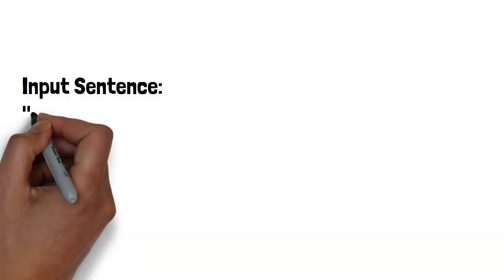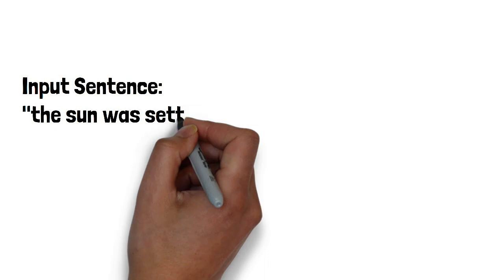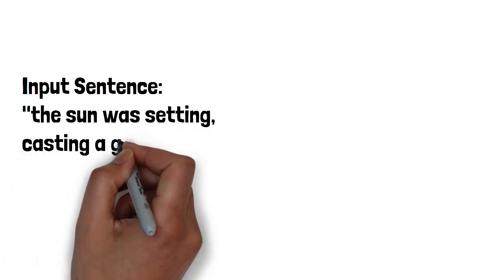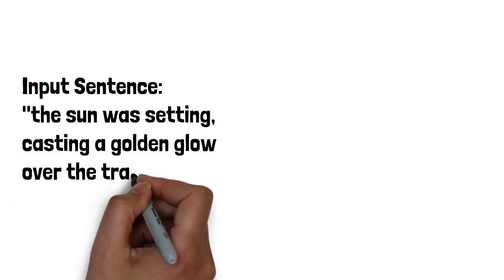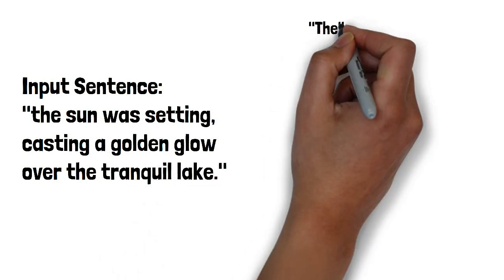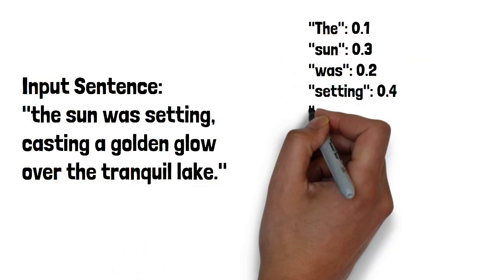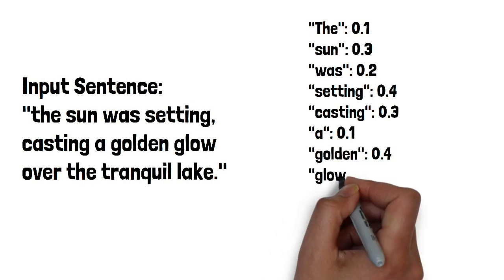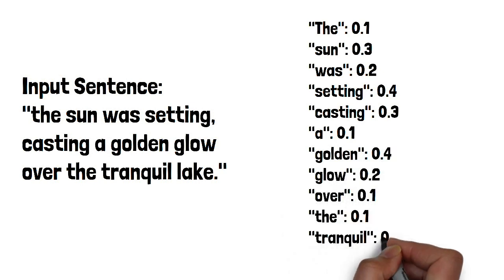To overcome these shortcomings, brilliant minds in the field introduced a groundbreaking solution called attention mechanisms. The attention mechanism revolutionized NLP applications, addressing the limitations of the earlier sequence-to-sequence model. Imagine the input sentence as a group of words, each carrying a specific meaning. The encoder, equipped with the attention mechanism, processes the input sentence word by word. As it encodes each word, it assigns a weight or importance to that word based on its relevance to the overall context.